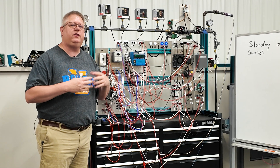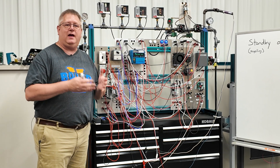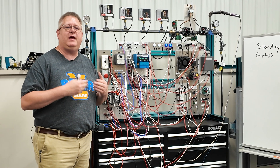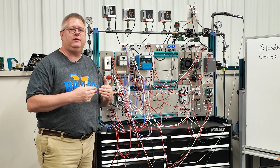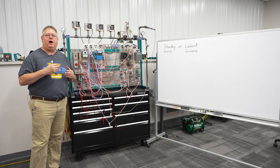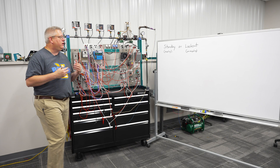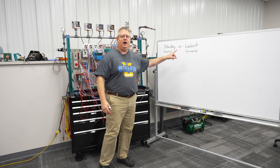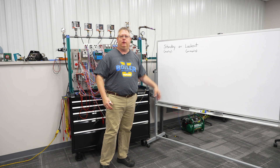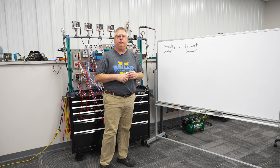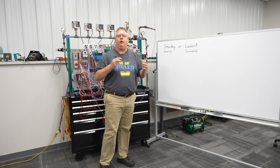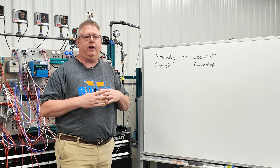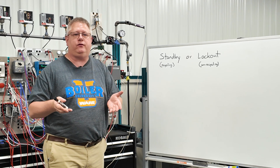One thing that we can do is test limits, which we need to do anyway. But when we test those limits, make notes — because there are essentially two limit circuits that constitute 90% of our boiler failures: we're out on a gas pressure switch or we're out on an operating pressure switch.